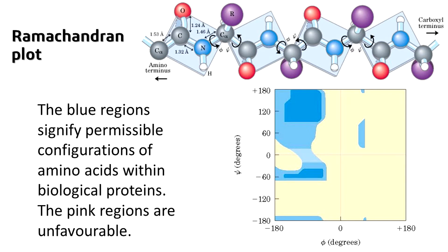Here we have shown a diagram of the Ramachandran Plot for you. Now, before we discuss the theory, let us do something by hand. Let us plot the values of phi and psi angles for a globular protein.